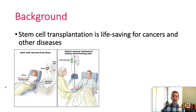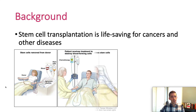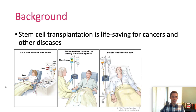Next, the patient who has cancer or some other disease requiring stem cell transplant gets chemotherapy to clear out the cancer cells, as well as any of the patient's own cells, and make room for the new stem cells in his or her bone marrow. Then after the chemo is done, the patient receives the stem cells from the donor intravenously. The stem cells then go to the bone marrow and start making new blood cells.